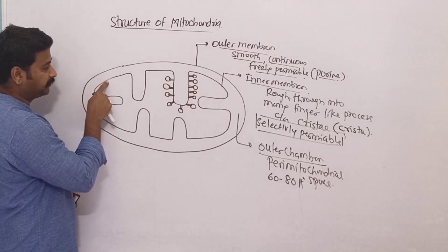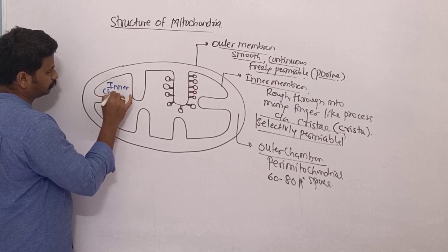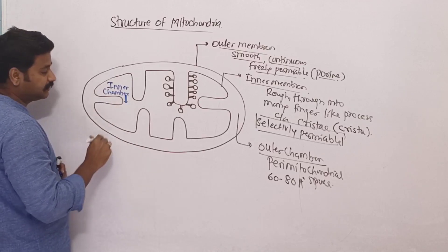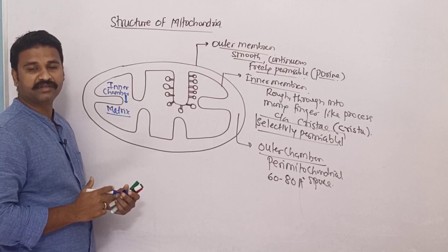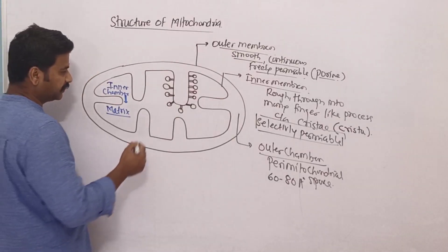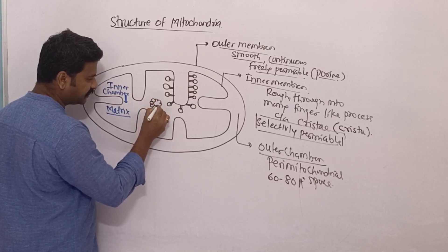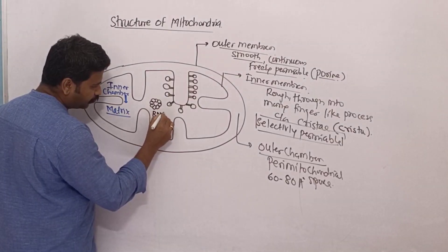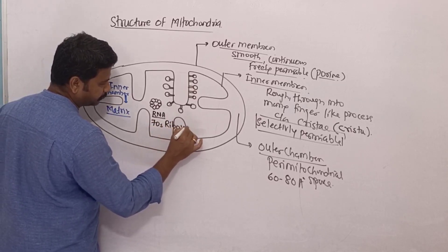The space bounded by the inner membrane, or the space inside the inner membrane, is called the inner chamber. This inner chamber is filled by the ground substance called the matrix. Inside the matrix we have mitochondrial DNA, which is double-stranded, single circular, and naked DNA. It also has its own RNAs and 70S type ribosomes.